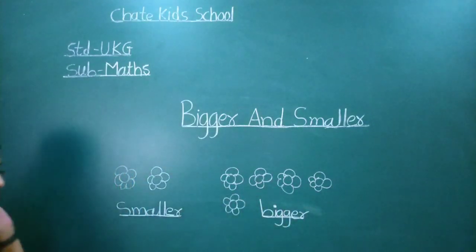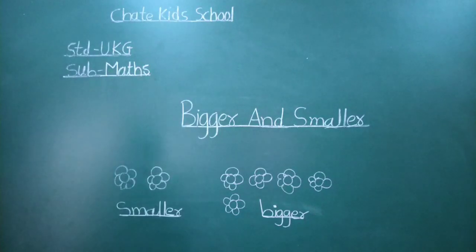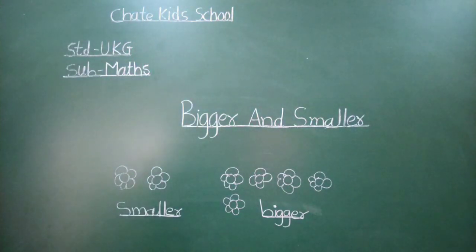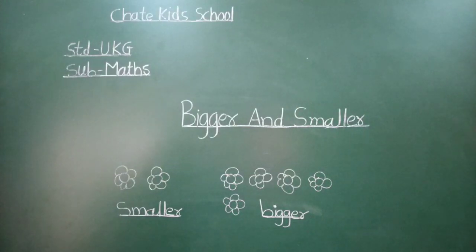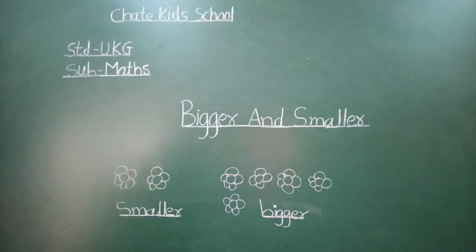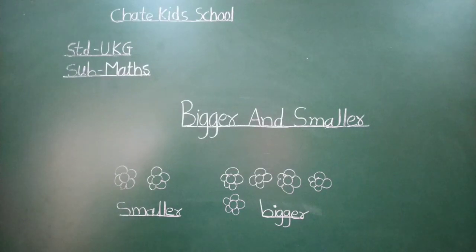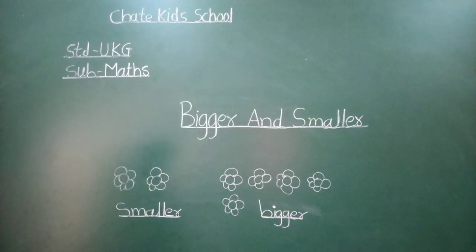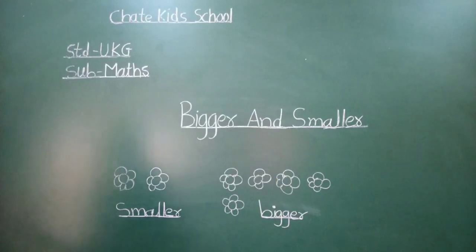Bigger. What is bigger and smaller? Bigger manje motha, jastu. And smaller means lahan, chota. Okay? Adha apadha. Next room ya.